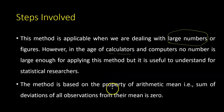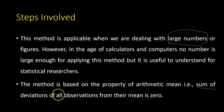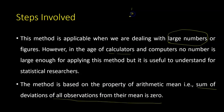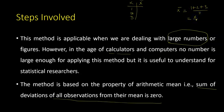What is the basis for this particular method? I have already told about the property in my previous videos. There is a property of arithmetic mean that the sum of deviations of all observations from the mean is zero. For example, let's say there are three numbers: 1, 2, 3. Their x-bar value would be 1+2+3 divided by 3, which is 6/3, equal to 2.